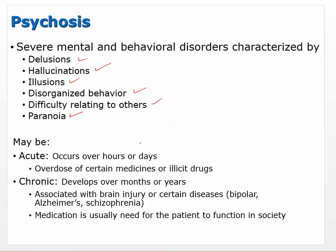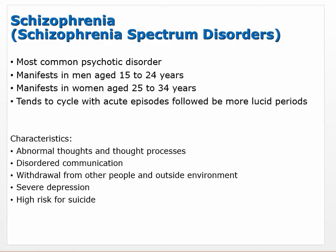Psychosis can be acute, occurring over hours or days, and we see this a lot with overdoses of certain medications — especially medications that increase dopamine levels. With illicit drugs like amphetamines, if somebody overdoses on methamphetamine, they'll start showing schizophrenia-like psychotic behaviors. Those are treated with antipsychotics, particularly haloperidol, which is a first-generation antipsychotic.